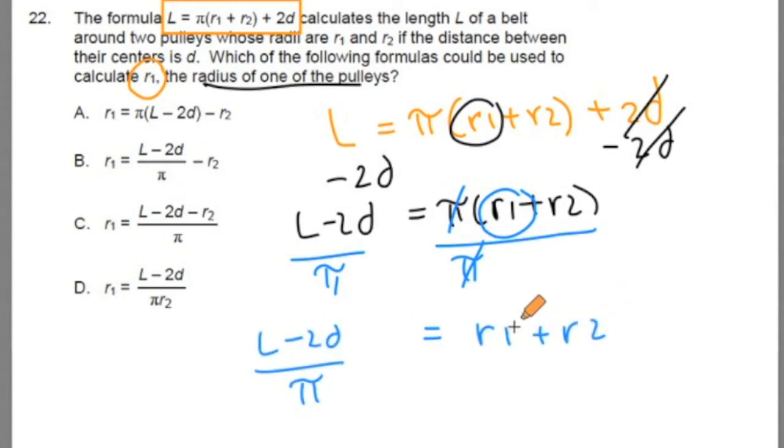And let's rewrite it. Now we have L minus 2d divided by pi equals r1 plus r2. I'm going to circle the r1 and do our last step. Trying to isolate the r1, we would subtract r2 from both sides. It cancels out here and we're left with r1 equals this thing.